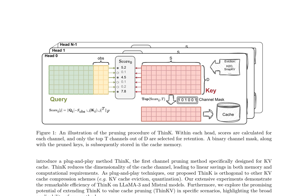We propose a simple yet effective method, THINK, for KV cache pruning. To pinpoint the least significant channels, we formulate the task as an optimization problem, aiming to minimize the loss in attention weights attributable to pruning. Using this criterion, we select the most critical channels in a greedy fashion. We evaluate THINK using the LLAMA 3 and Mistral models and validate its effectiveness across various long-sequence datasets. The results indicate that when paired with token eviction methods, THINK not only achieves comparable or superior accuracy but also reduces KV cache memory costs by more than 20%.